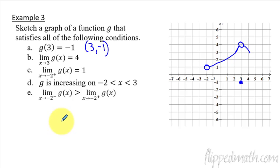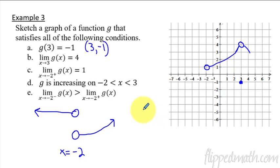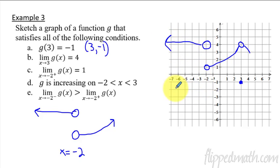The last condition is that the left-sided limit as x approaches negative 2 is greater than the right-sided limit at negative 2. This means the left side approaching negative 2 has to be at a higher y value than the right side. Since the right side approaches y equals 1, the left side must come in from somewhere above that. So we draw the left portion of the graph coming down from higher up, making the left limit greater than the right limit at negative 2.